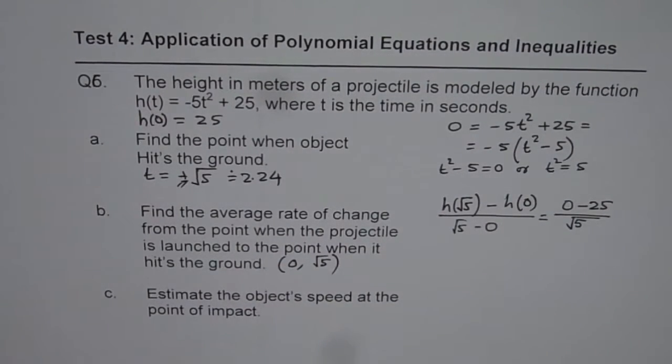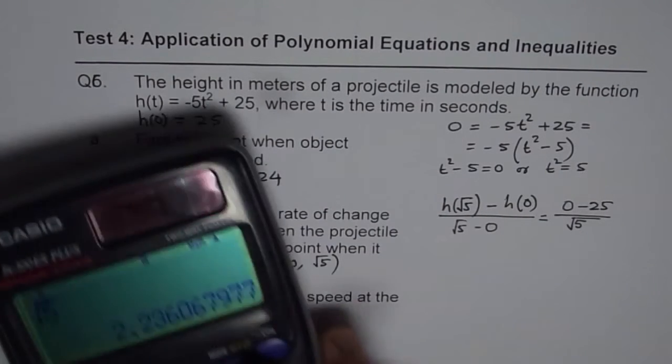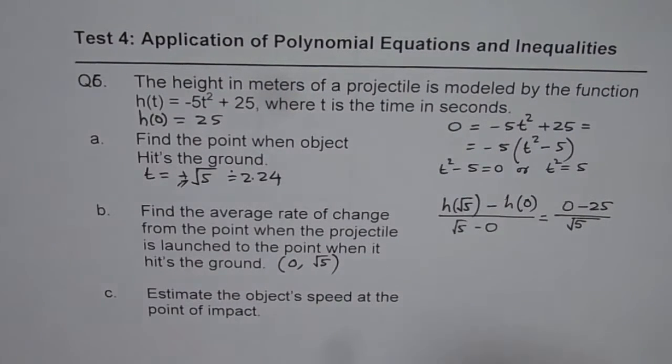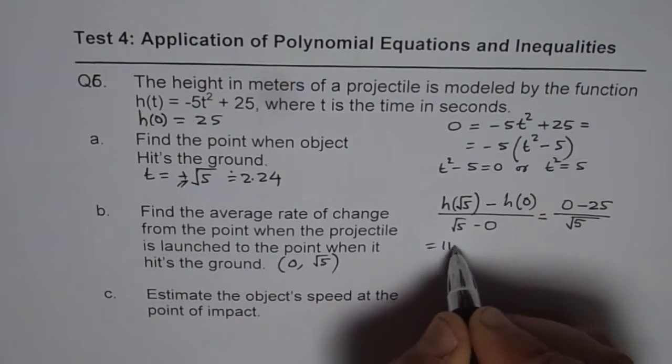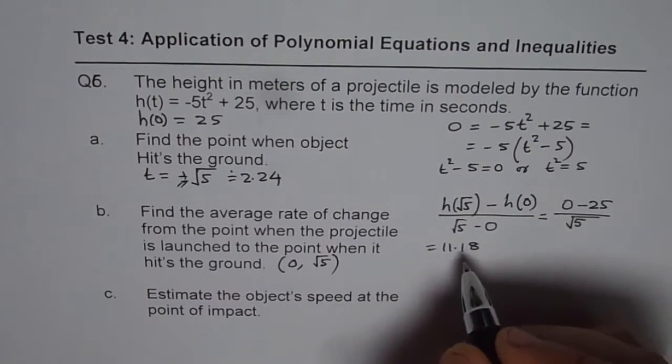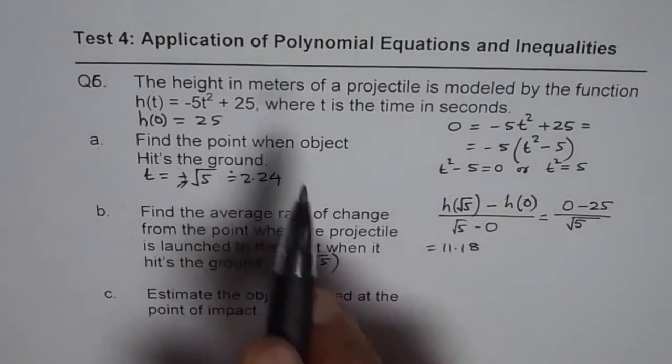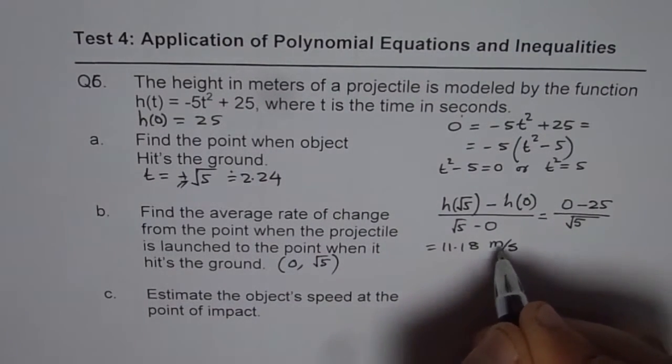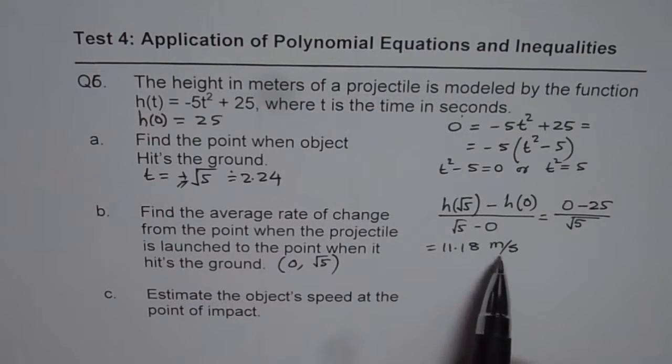So it is negative, average rate of change since the height has decreased. And the answer is, let us use the calculator once again. So we will say 25 divided by √5, which equals 11.18. So we can write this as 11.18 and we should always mention the units. Height is in meters and time is in seconds, so it is meters per second. If you don't write the units, you lose marks in this case.